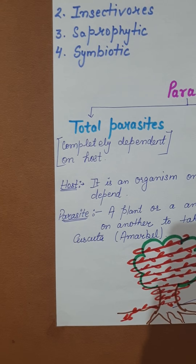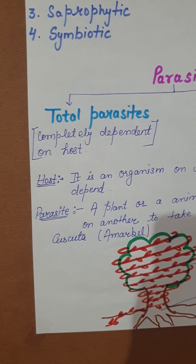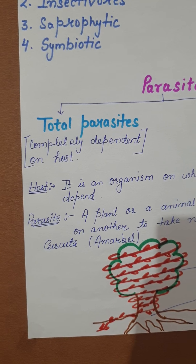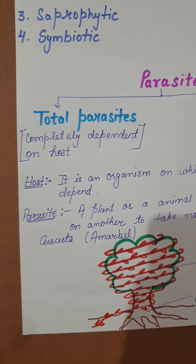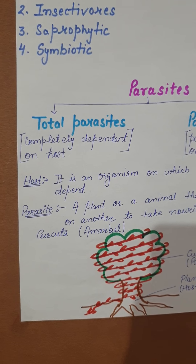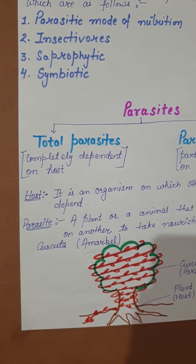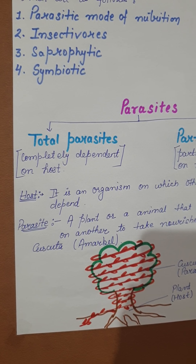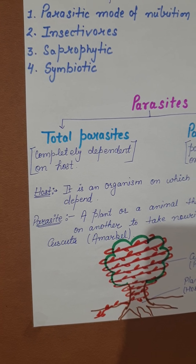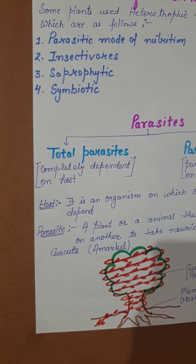Total parasites are those parasites which are completely dependent on a host. Host means any organism on which the parasite can survive or depend. In simple language, think of a small baby — she is fully dependent on her mother in every way: food, water, everything. So in that stage, the small baby is a total parasite, completely dependent.